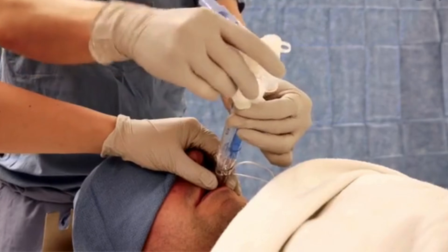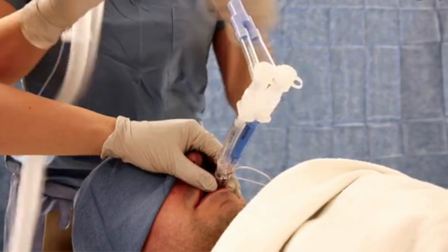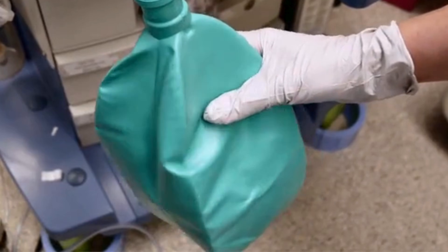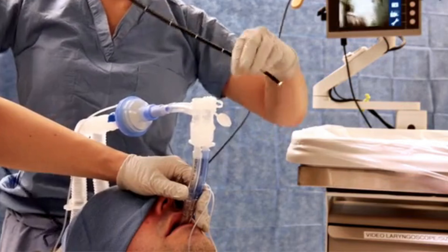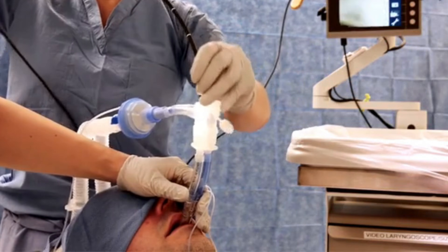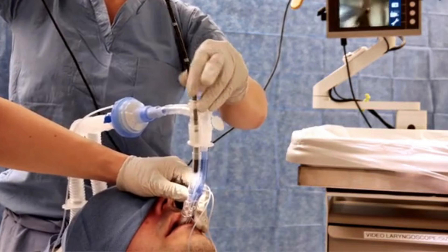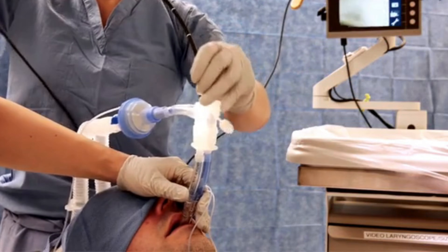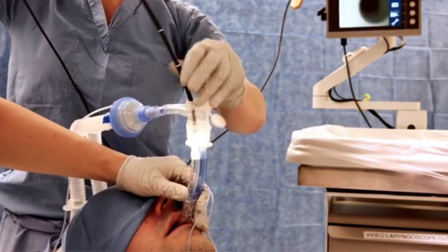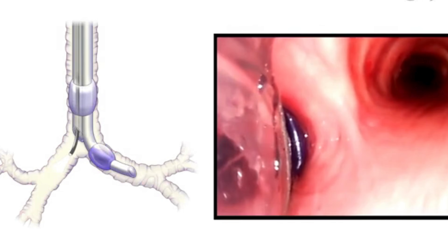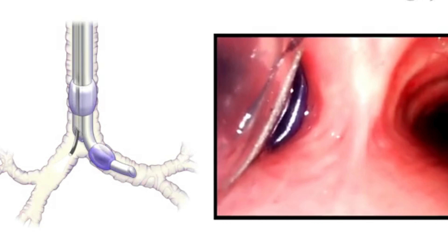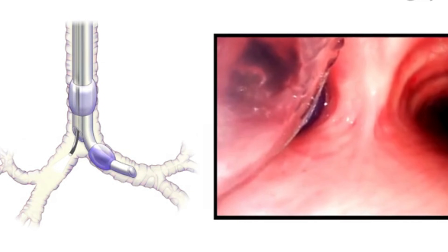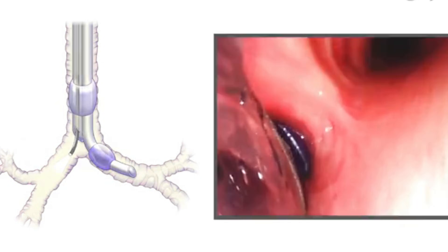Use the Y connector to connect the circuit to the double-lumen endotracheal tube. Inflate the tracheal cuff and establish ventilation. Monitor the patient for exhaled carbon dioxide. Perform fiber-optic bronchoscopy to confirm that the double-lumen endotracheal tube is positioned correctly. First, insert the bronchoscope into the tracheal lumen. Regardless of whether the tube has been placed on the left side or the right side, an inflated bronchial cuff, which is often blue, should be visible in the ipsilateral main bronchus with minimal herniation of the cuff into the trachea.